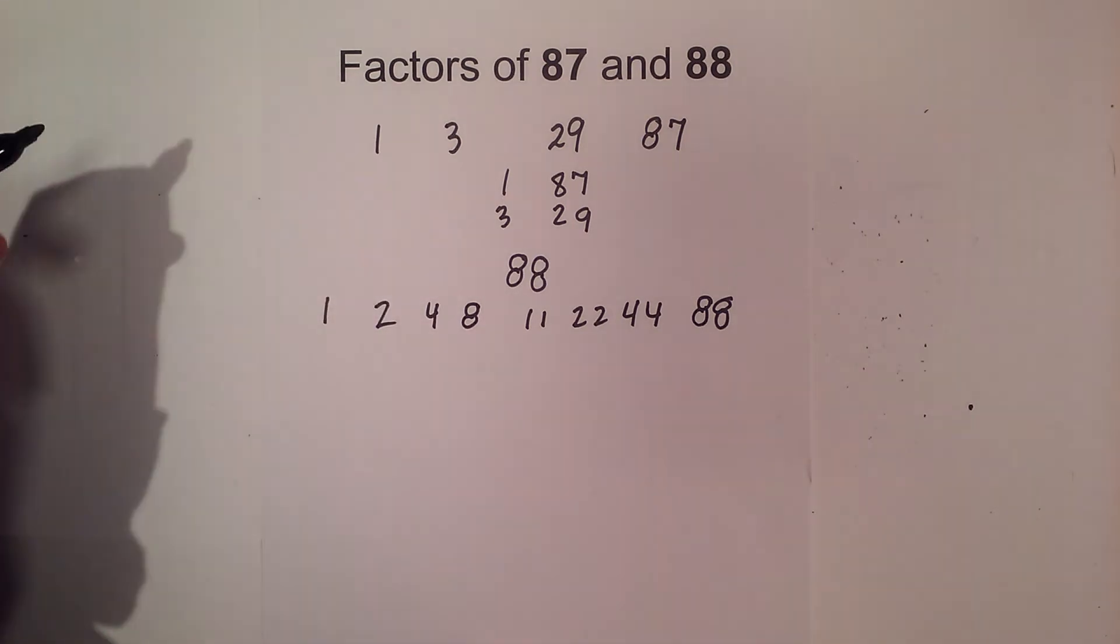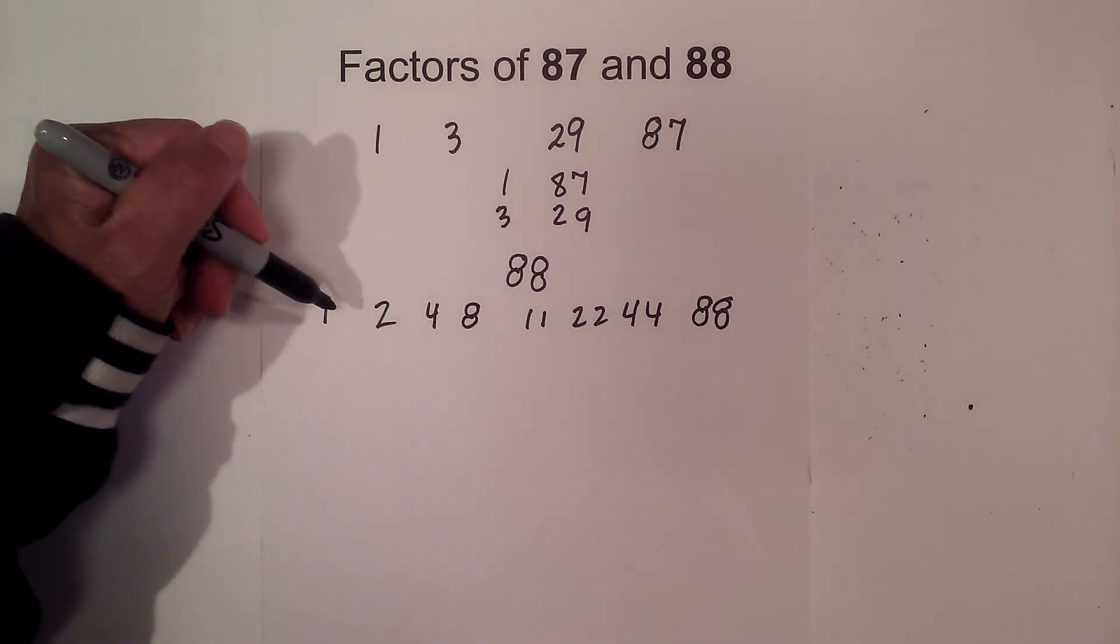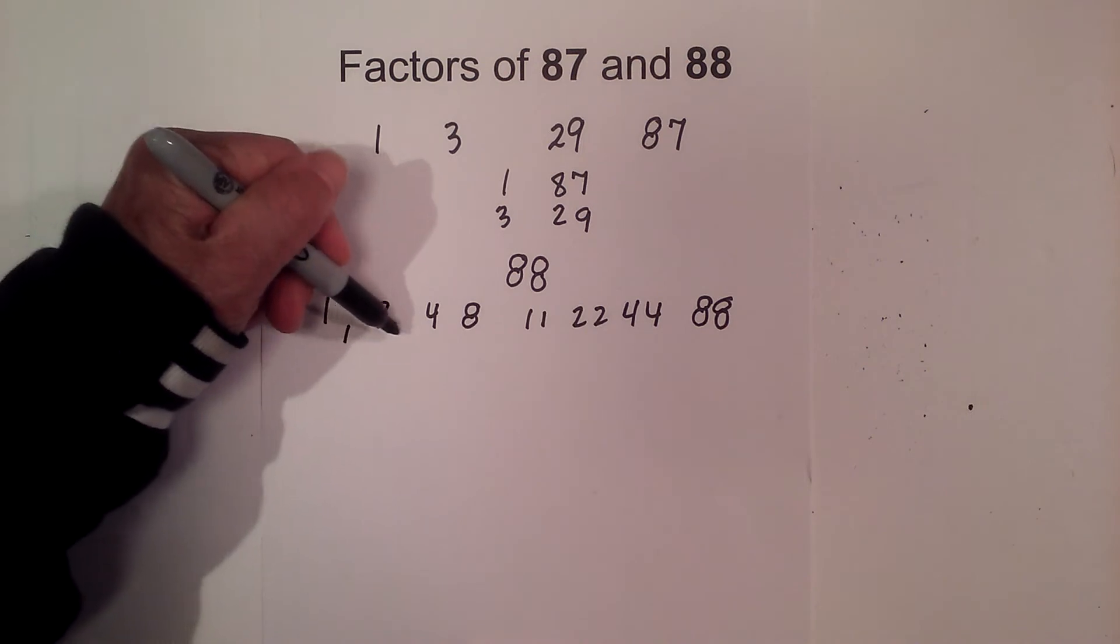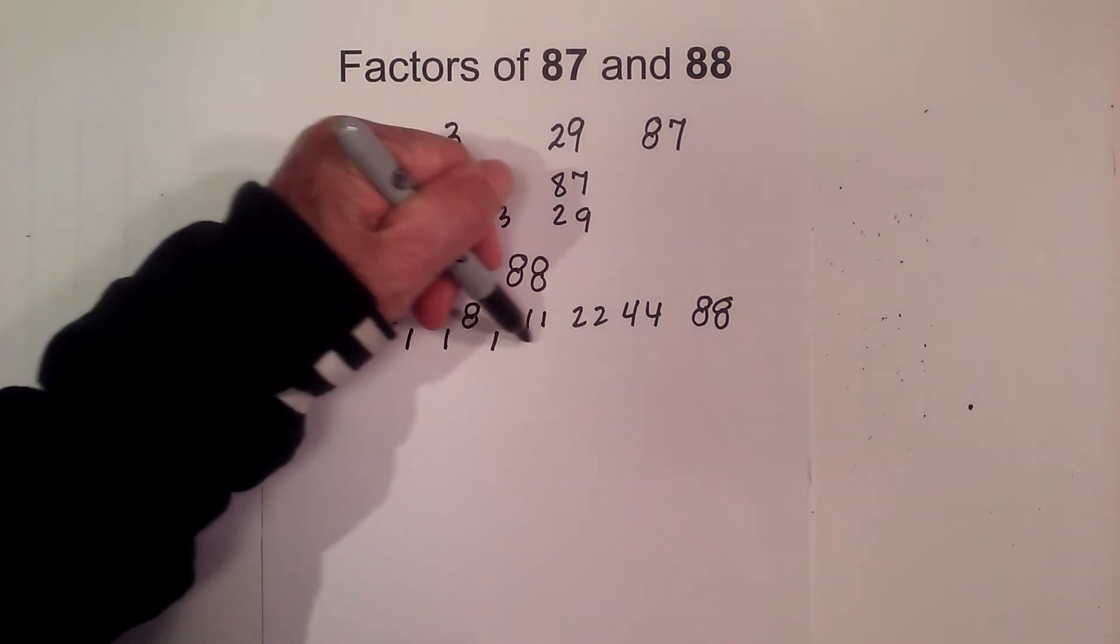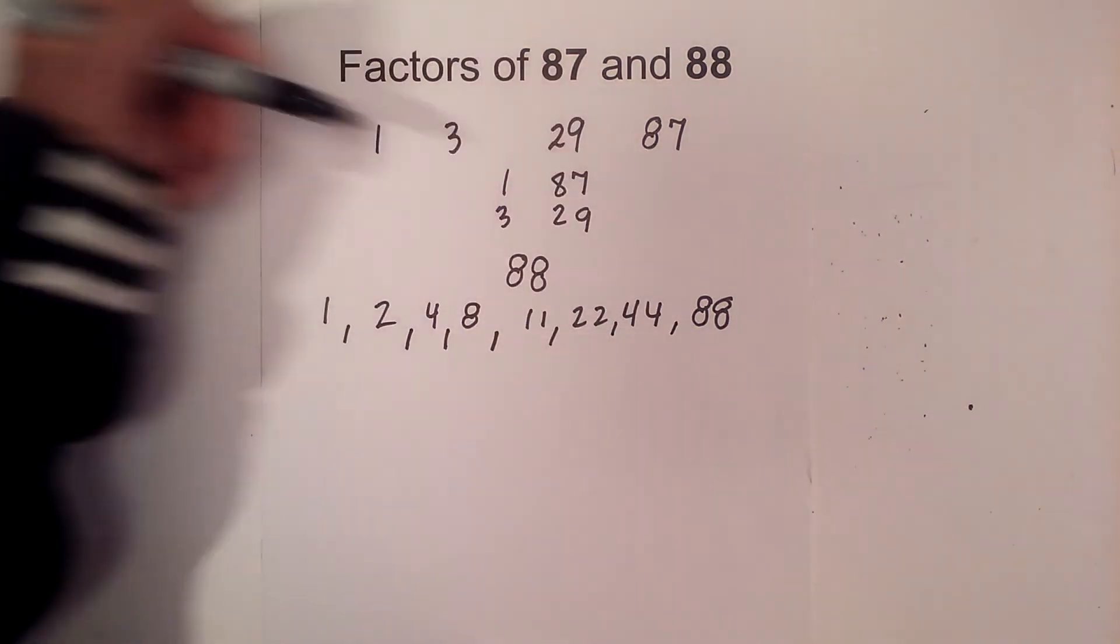And then 9 and 10 do not go in, so we are now finished. So the factors of 88 are 1, 2, 4, 8, 11, 22, 44, and then 88.